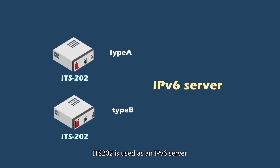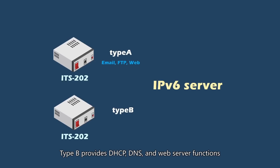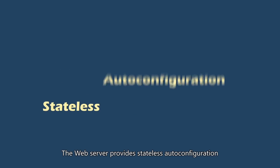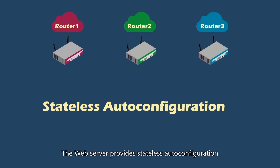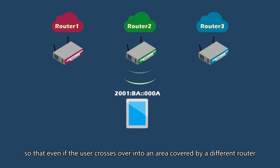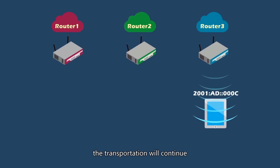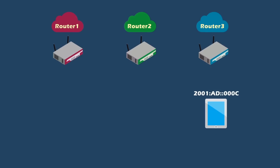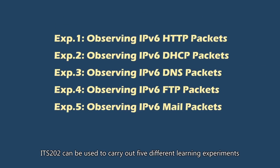ITS202 is used as an IPv6 server. Type A provides email, FTP, and web server functions. Type B provides DHCP, DNS, and web server functions. The web server provides stateless auto-configuration, so that even if the user crosses over into an area covered by a different router, the transportation will continue. ITS202 can be used to carry out five different learning experiments.